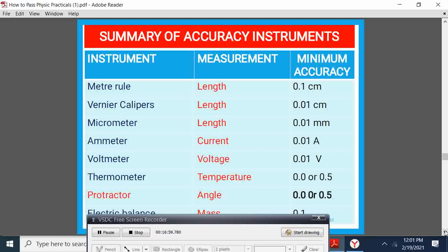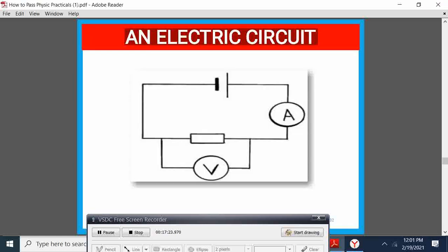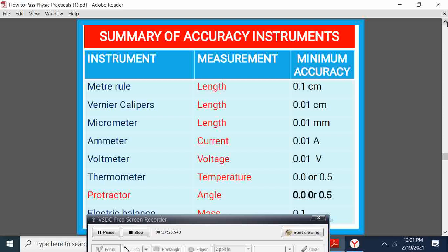Here is a summary of the minimum accuracy required. I've talked about the meter rule, 0.1. Vernier calipers to take the length, 0.01. A micrometer, length, 0.01 millimeters. Ammeter, 0.01 amperes. Voltmeter, 0.01 voltage. We have the thermometer, 0.005. Protractor, the same, 0.005. Electric balance, 0.1 gram.